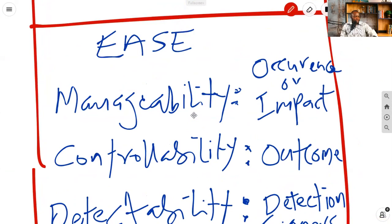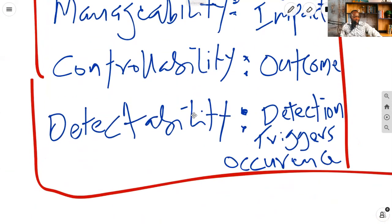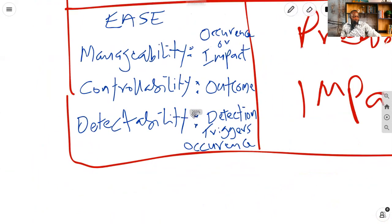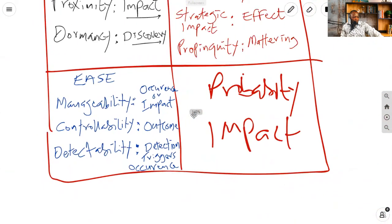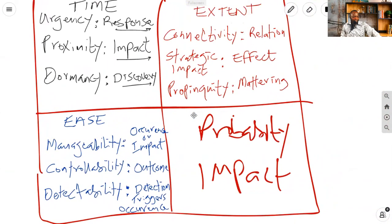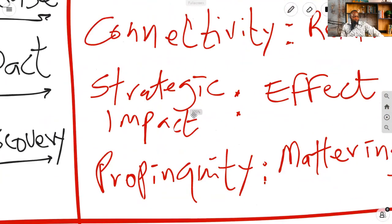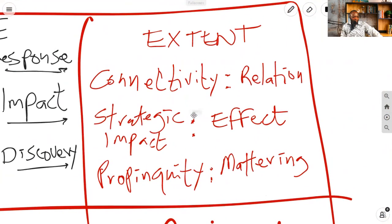And last but not least, we have detectability. This again is ease of detecting that a risk has occurred or is about to occur. That's detectability. So a risk flying under the radar, detectability is low. We want detectability to be high. There's actually an error somewhere in the PMBOK guide I'm going to show you guys, hopefully by the time we get done.